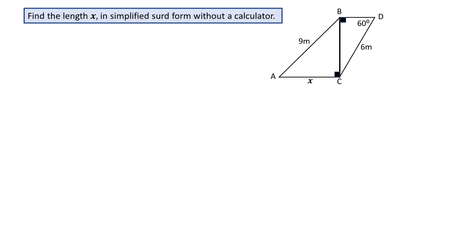To answer this problem, first note there are two right-angled triangles: Triangle ABC and BDC. The video shows how to use trigonometry and then Pythagoras to find X.